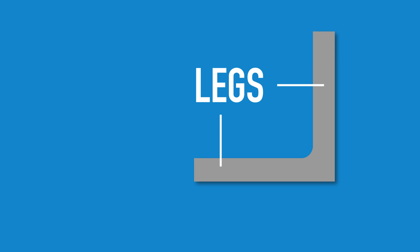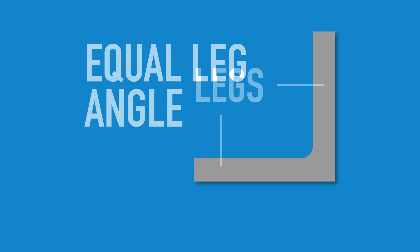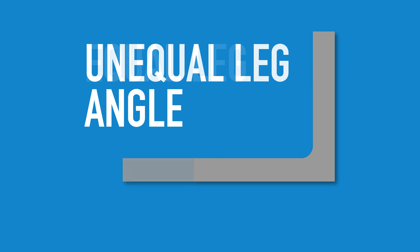The two perpendicular portions of Structural Angle are called the legs. They can either be the same length, known as equal-legged angles, or different lengths, known as unequal-legged angles.